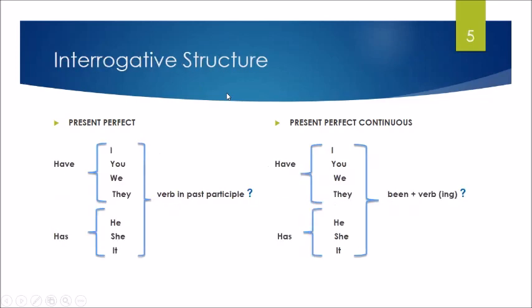For the interrogative, remember that we set the verb have or has at the beginning. In the present perfect continuous we are going to apply the same formula - we are going to write have or has before the subject.